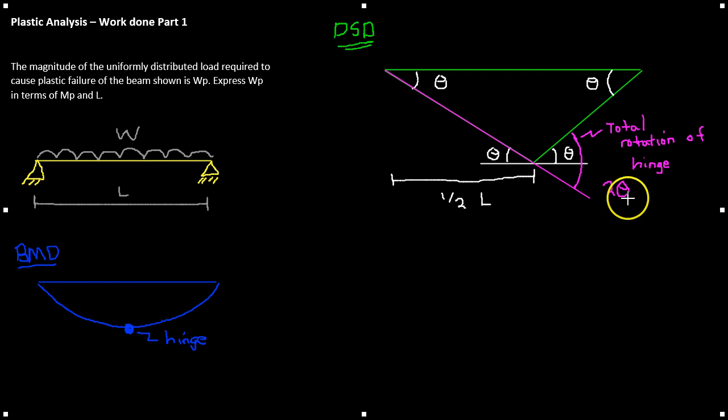This enables us to calculate our internal work for this scenario. Our internal work, as we said before, is the moment times the rotation for each hinge position. We only have one hinge that we need to concern ourselves with. So, the internal work equals MP times the rotation, which is 2 theta.